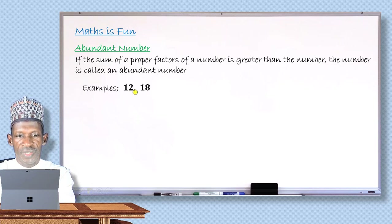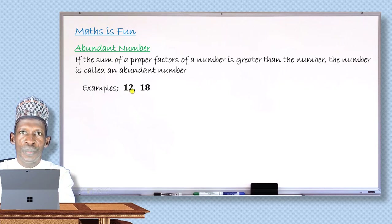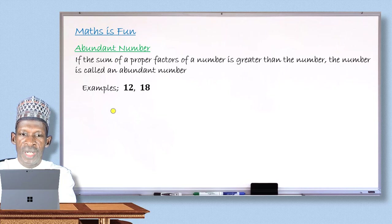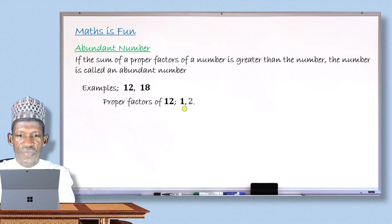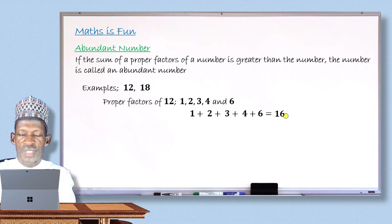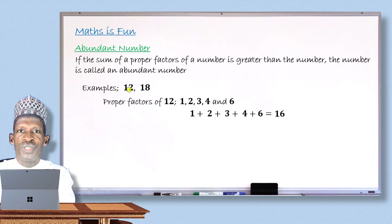For example, 12 is abundant. The proper factors of 12 are 1, 2, 3, 4, and 6. Their sum is 16, and since 16 is greater than 12, that confirms 12 is an abundant number. Similarly, 18 is abundant: its proper factors are 1, 2, 3, 6, and 9, and their sum is 21, which is greater than 18.